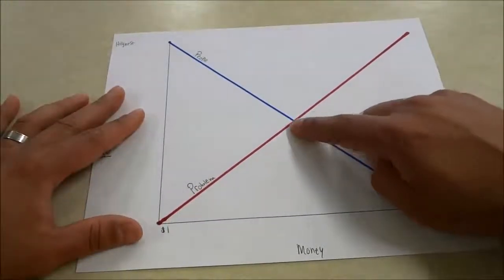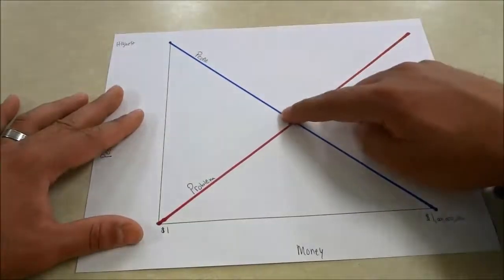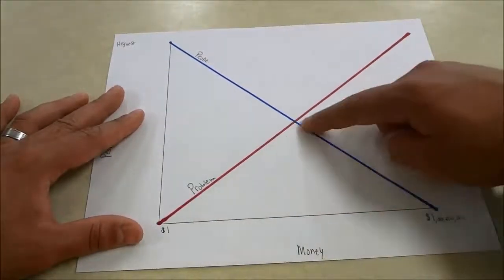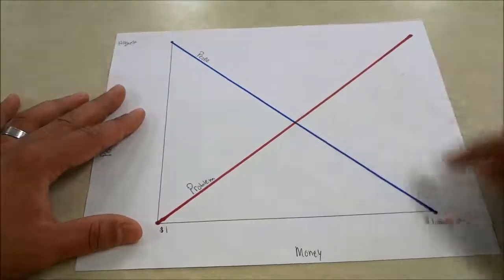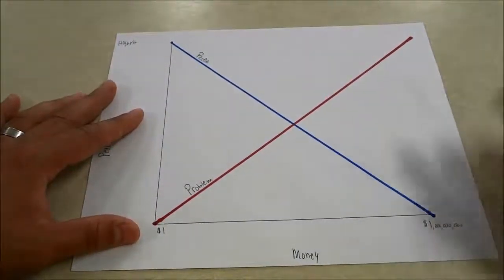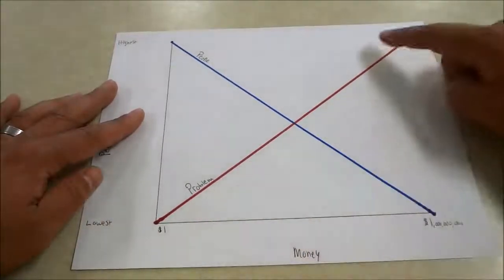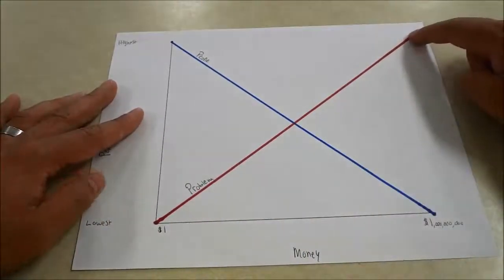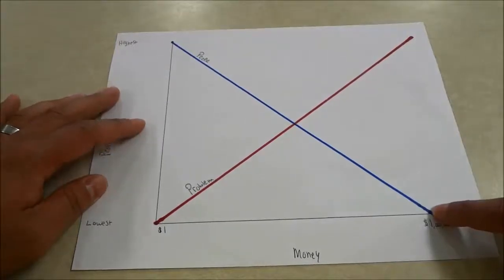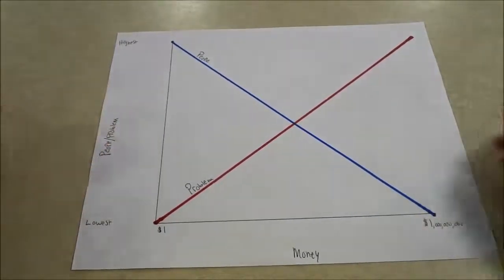In the middle, this is the average — a decent amount of people willing to do it and the problem is decently hard to solve. If you want to earn the highest income, you need a very hard problem to solve and very few people willing or able to solve it.